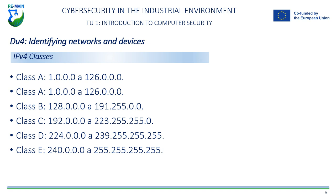Class C addresses range from 192.0.0.0 to 223.255.255.0. Class D IP addresses are used for multicasting, which means sending packets to multiple devices on the network. Class D addresses range from 224.0.0.0 to 239.255.255.255. Class E IP addresses are reserved for future use and are not currently used on most networks. Class E addresses range from 240.0.0.0 to 255.255.255.255.